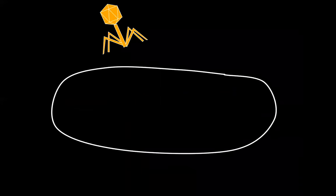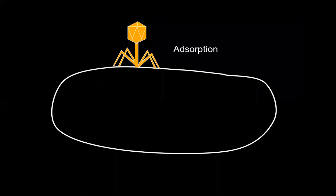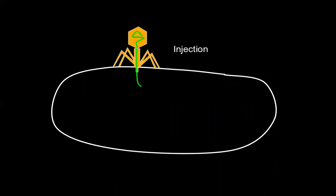First, the bacteriophage virus adsorbs to the outside surface of the bacterial cell host, and then it has to inject its genetic information into the host cell. That genetic information contains genes that are recipes to make all the proteins that that virus is composed of.